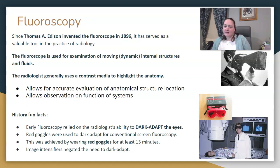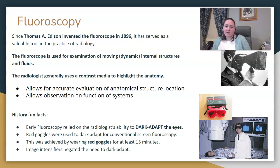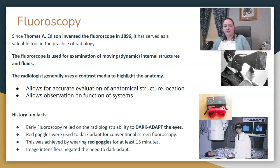A lot of your GI anatomy — we can't identify the function or specific lining of without the addition of contrast media. So fluoroscopy gave us the ability to see moving or dynamic internal structures and highlight certain areas of anatomy, or locate anatomy that we wouldn't normally see, like the biliary tree or esophagus.